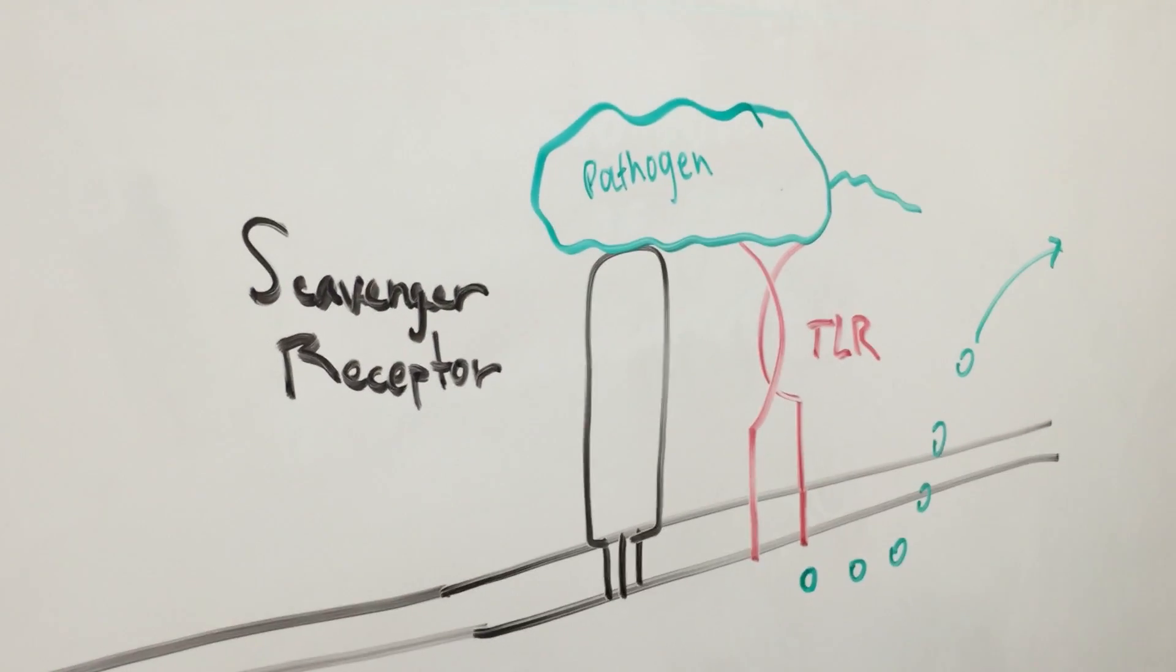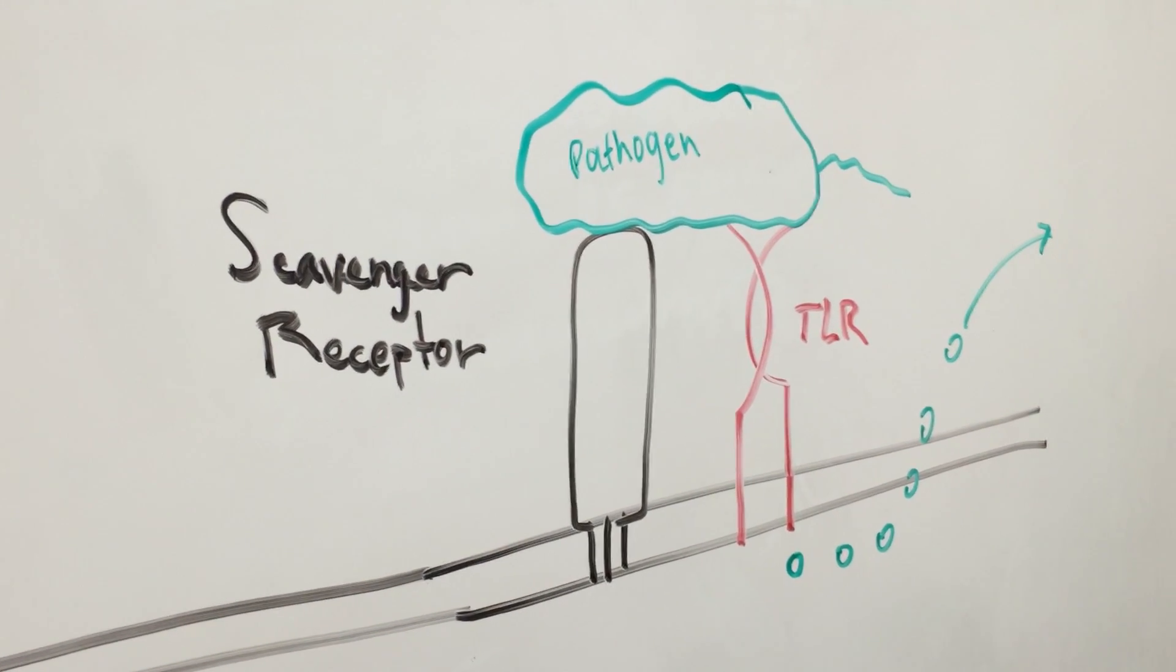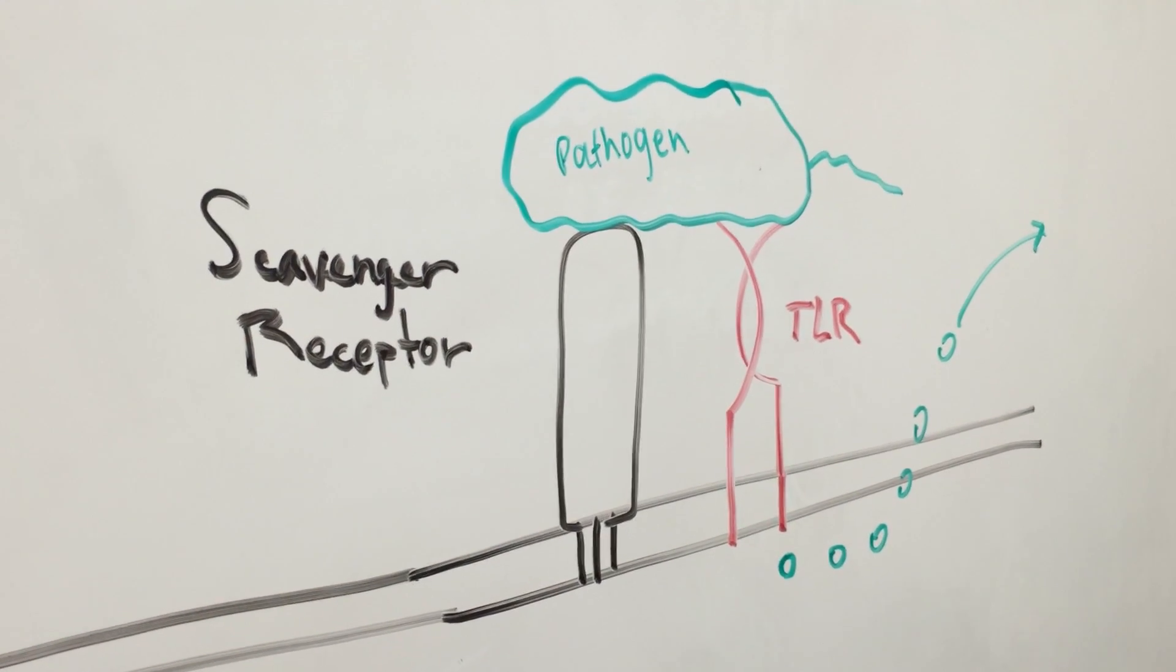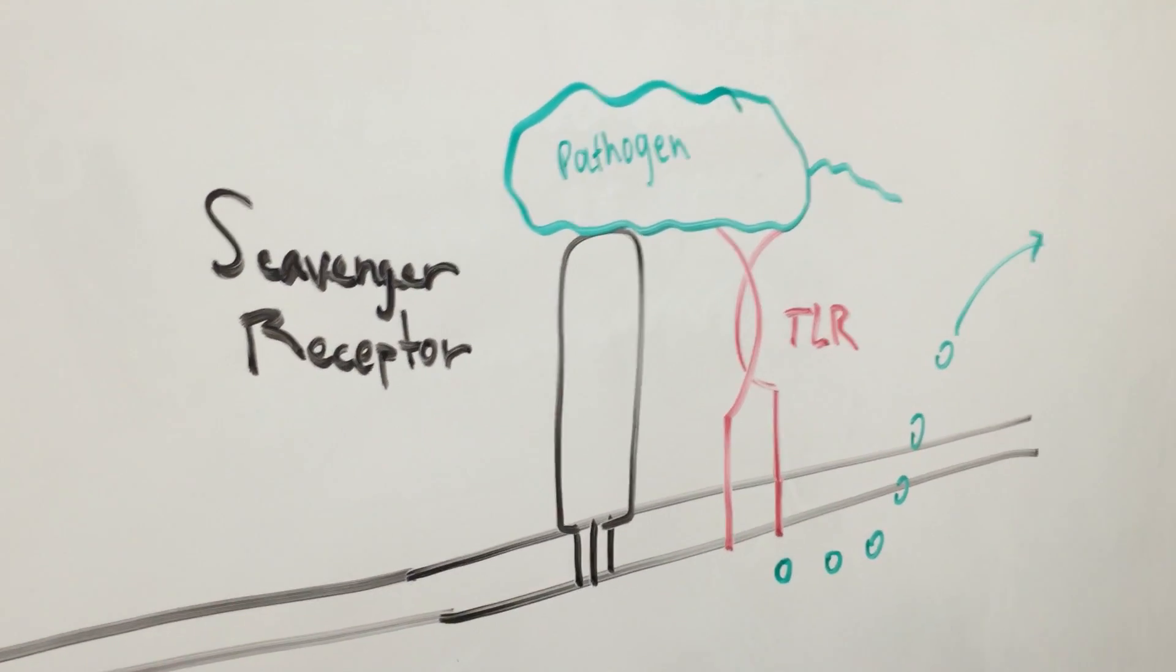The TLR can then send signals to other cells or to the inside of the cell to make molecules that would work against the specific pathogen that it bound to.